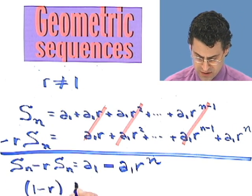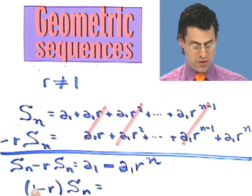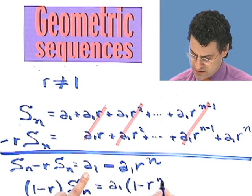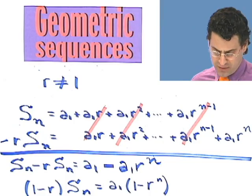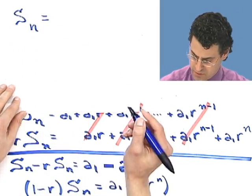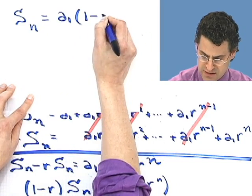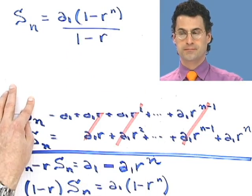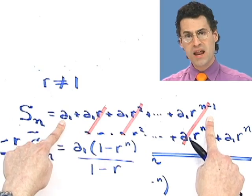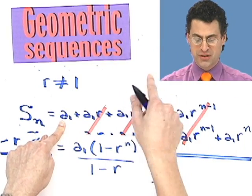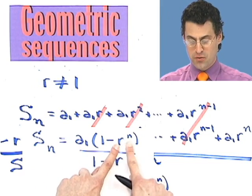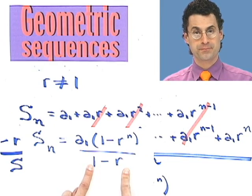I can solve for s_n by factoring: I get 1 minus r times s_n on the left. That equals a1 times 1 minus r to the n. Solving for s_n, I get: s_n equals a1 times 1 minus r to the n, all divided by 1 minus r. That is the sum. If you want to add up the first n terms of a geometric sequence, take the first term, multiply by 1 minus the common ratio raised to the n, and divide by 1 minus r.